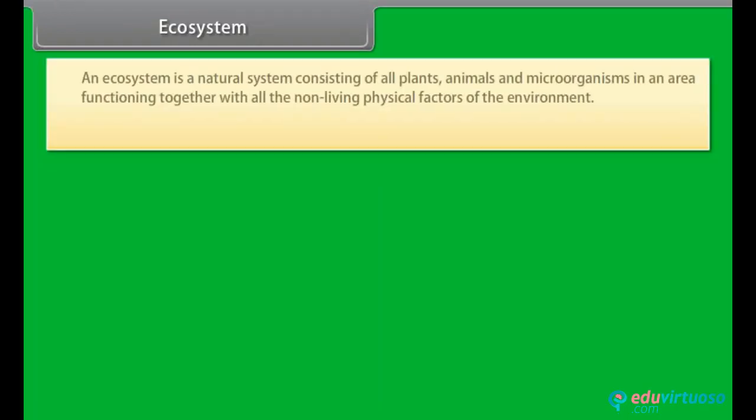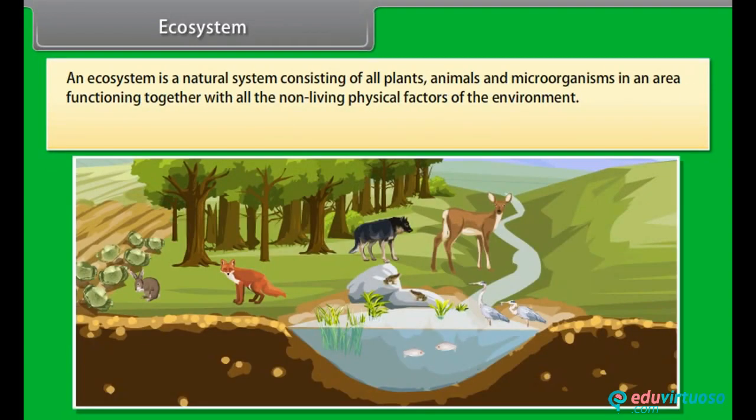An ecosystem is a natural system consisting of all plants, animals and microorganisms in an area functioning together with all the non-living physical factors of the environment.